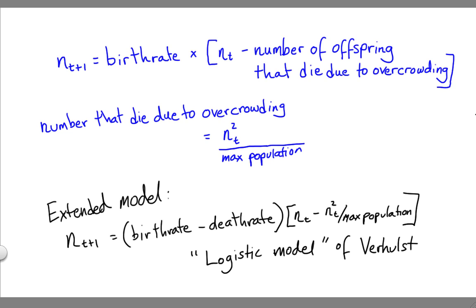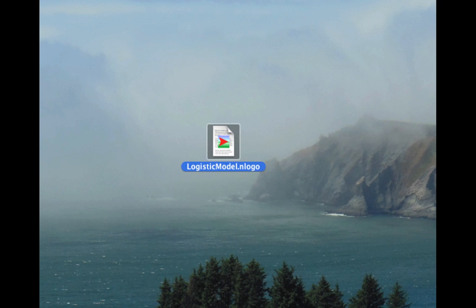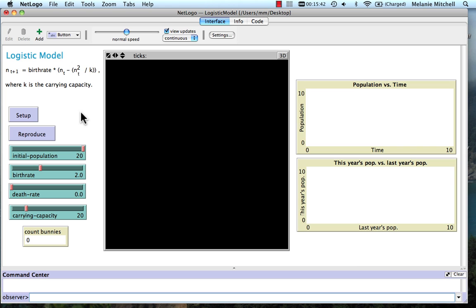Now let's see this run in NetLogo. The model is called logisticmodel.nlogo, and as usual you can download it from the link below or from the course materials page. Here's what the model looks like.